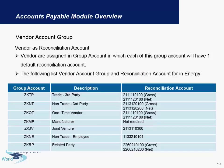A vendor account group is an accumulation of different kinds of vendors that a company has. Vendors are assigned in group accounts, and each group account will have a default reconciliation account. For example, there can be a Trade Third Party group, within which there can be one or more reconciliation accounts specific to only that group.